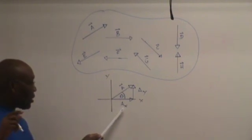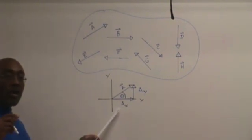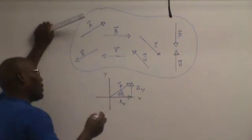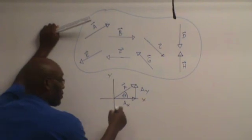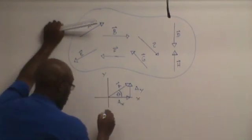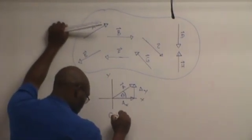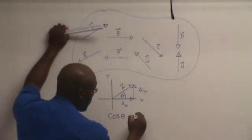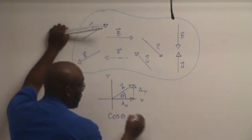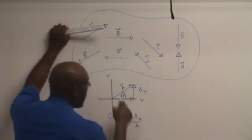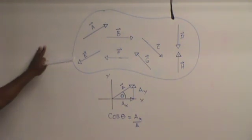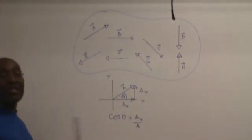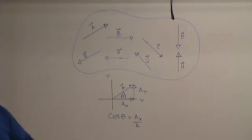Let's do the A subscript X component first. Look at this diagram and you will see that we can use cosine. By definition, cosine of theta, which is this angle, is equal to A subscript X over A, which is the hypotenuse. I need an equation for A subscript X, so I need to isolate A subscript X by itself.